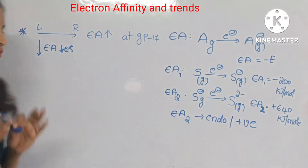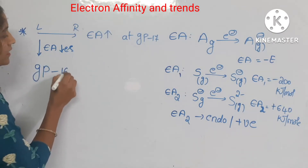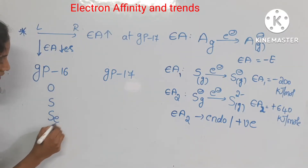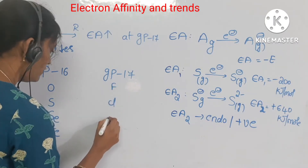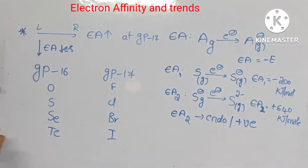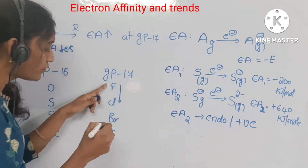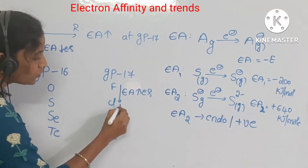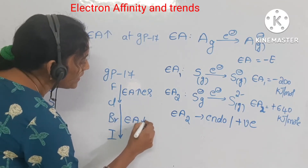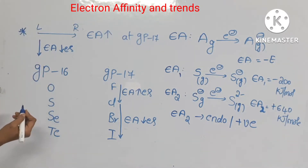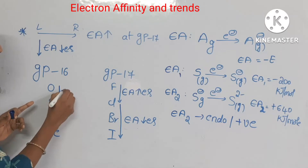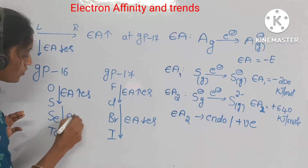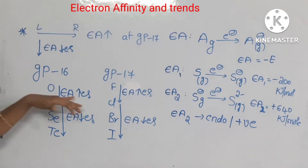What is the reason behind this? Take group 16 elements and group 17 elements — oxygen, sulfur, selenium, and tellurium; fluorine, chlorine, bromine, and iodine. From fluorine to chlorine, electron affinity increases. From chlorine to iodine, electron affinity decreases. In the same way, from oxygen to sulfur, electron affinity increases. From sulfur to tellurium, electron affinity decreases. What is the reason behind these variations?